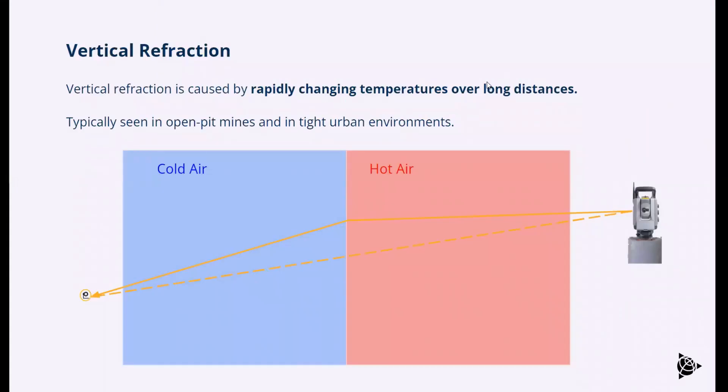If you're measuring through changing air conditions, especially changing over long distances, like an open pit mine or tight urban environments, you can have rapidly changing air temperatures and conditions. One section of hot air, one section of cold air. You have a known distance to the monitor prism, which is measured at that first measurement. The actual distance is this dotted line here. When you're measuring with optics through air, especially when you have changing air, the laser can refract depending on air densities. That can change that measured distance to the monitor prism. This will change pretty dramatically depending on air conditions.